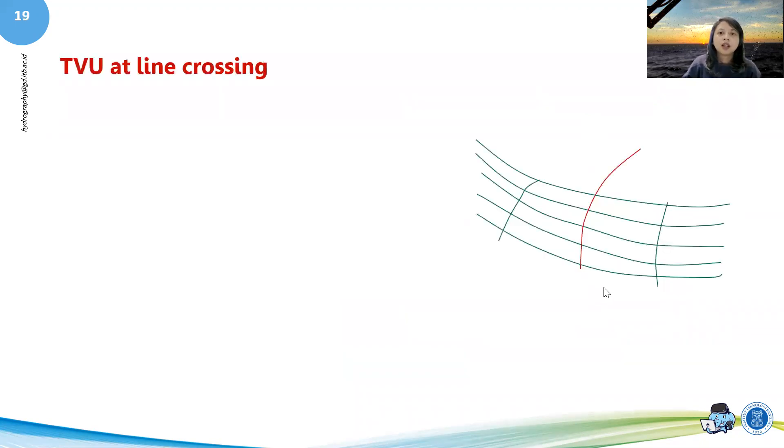The first thing that you want to see is which line crossing that we are going to focus on. Here we can see at least one, two, three, four, five, five times three, fifteen line crossings. For example, we're going to focus on this line.